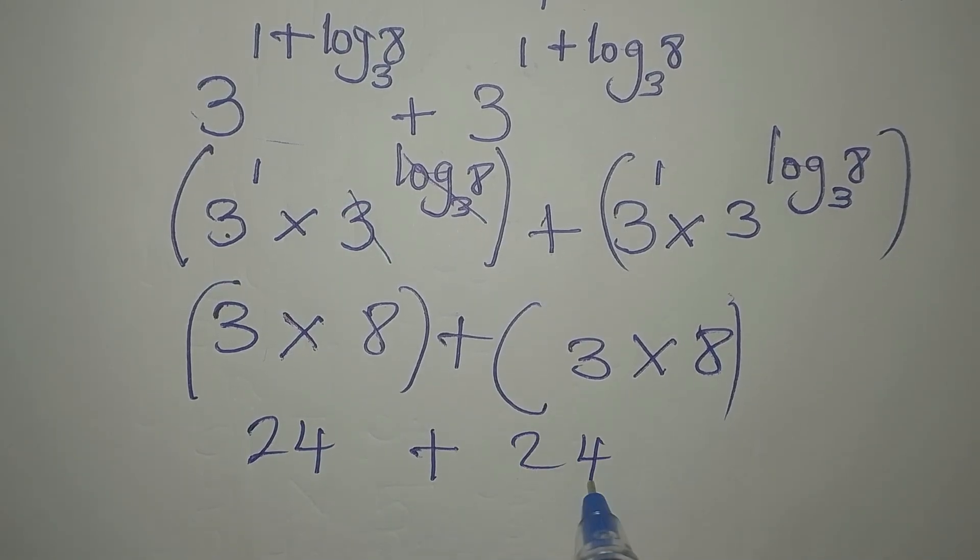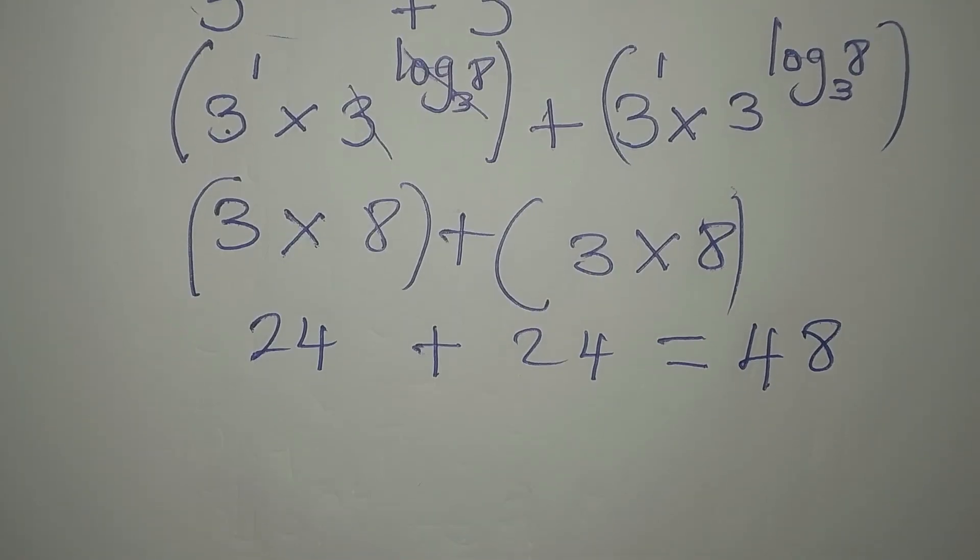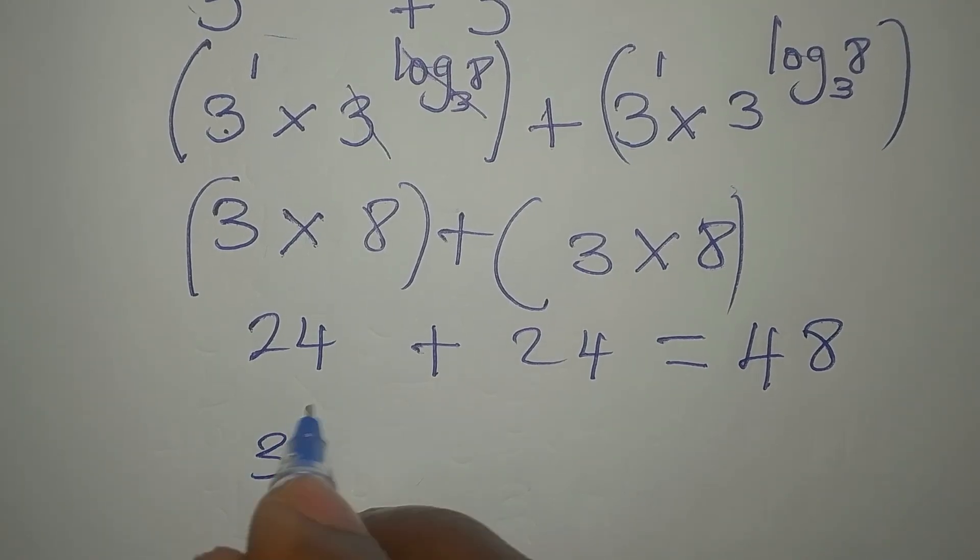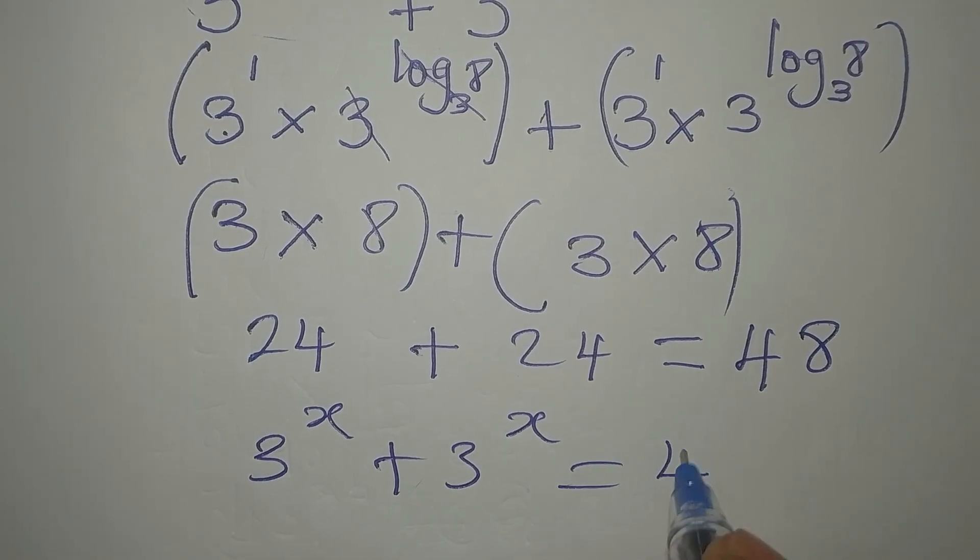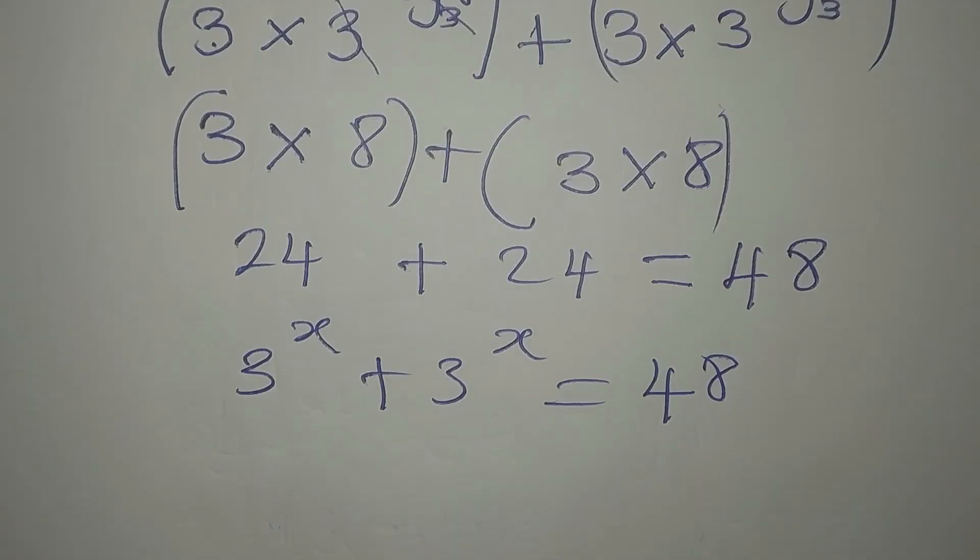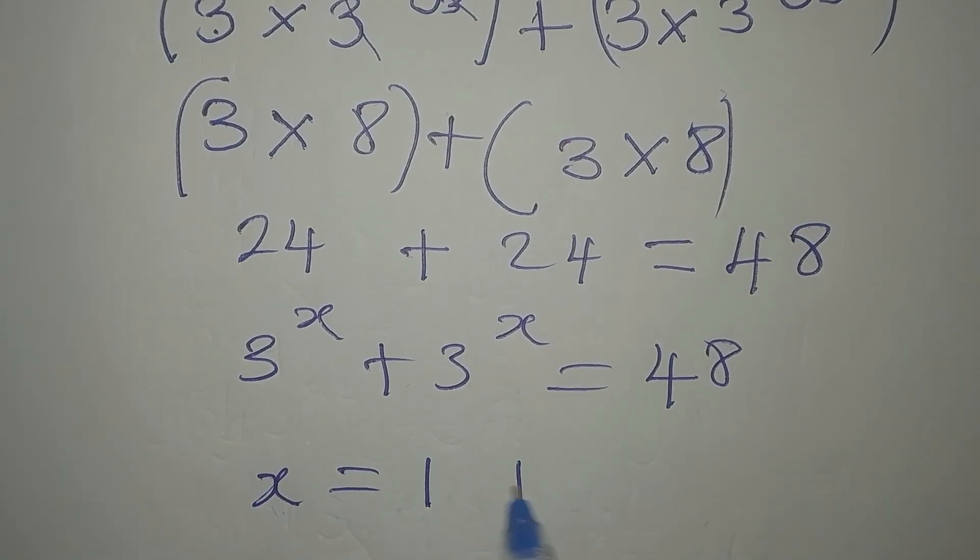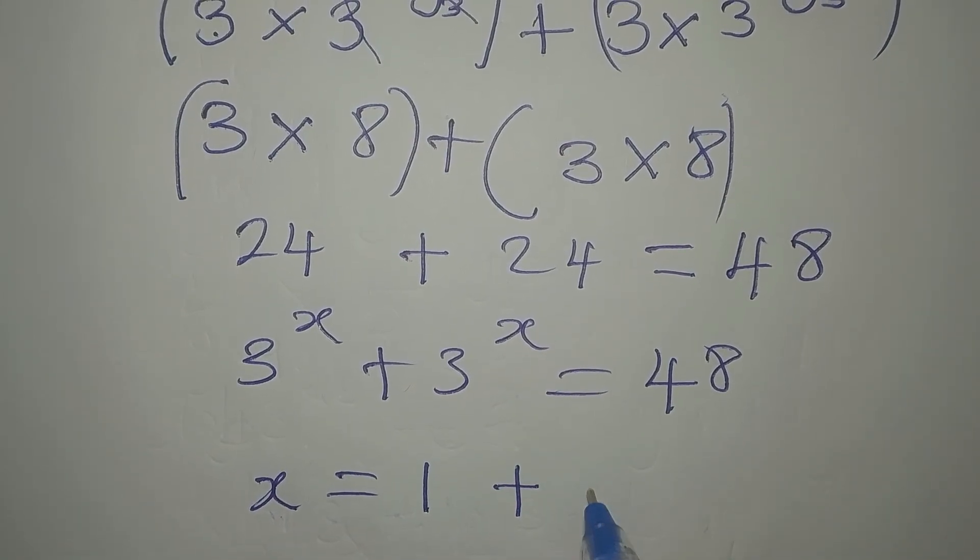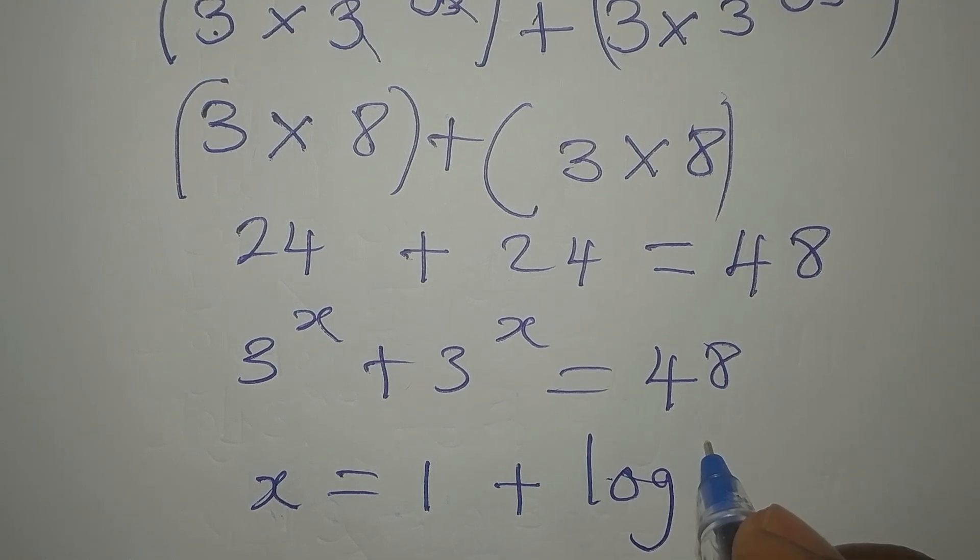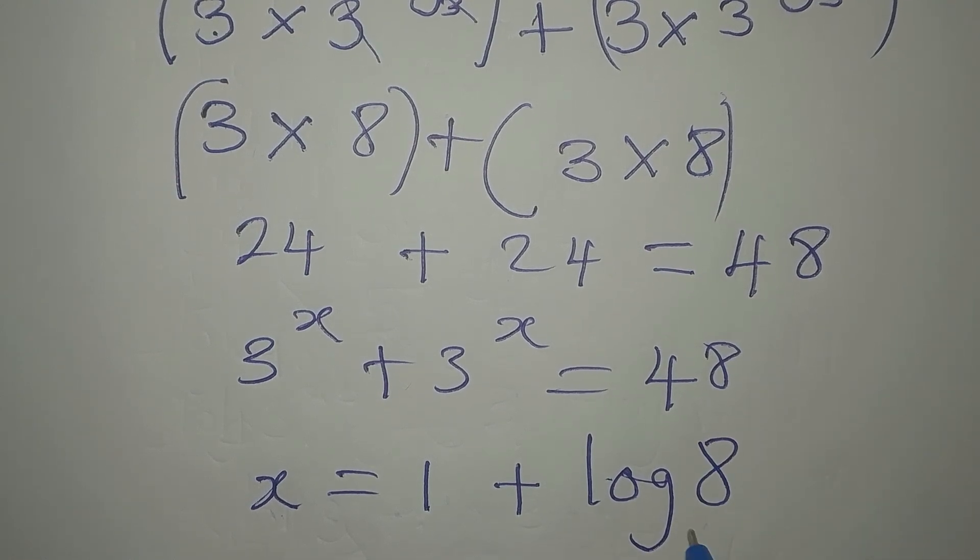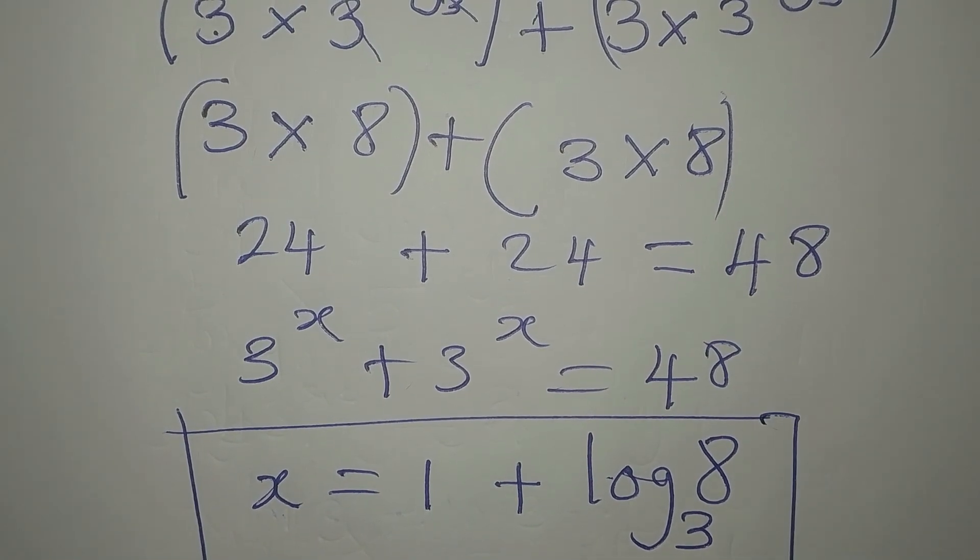We'll now close that. 3 times 8 is 24, plus 3 times 8 again, another 24, which is equal to 48. And mind you, the given equation is 3 to the power of x plus 3 to the power of x equals 48. So we are very correct to say that our x is 1 plus log 8 to the base of 3. Thank you for watching.